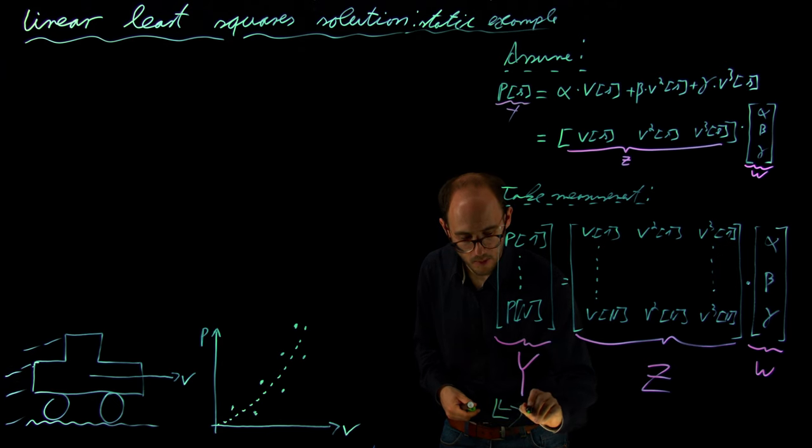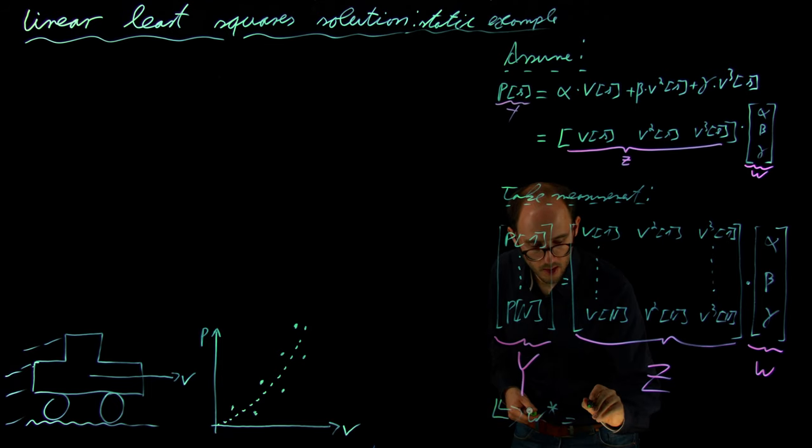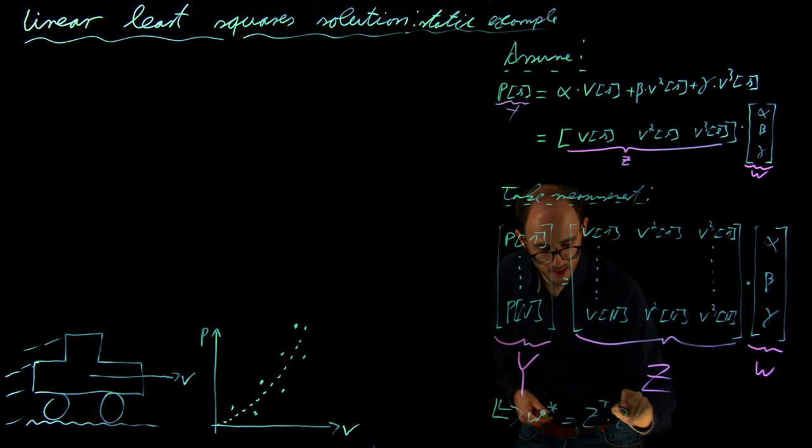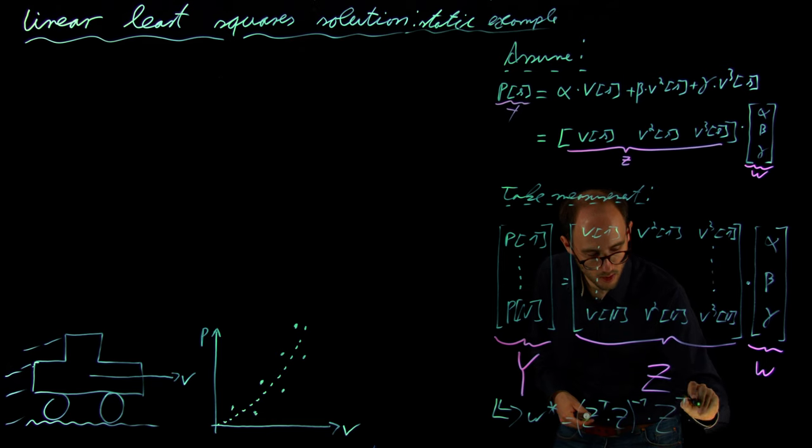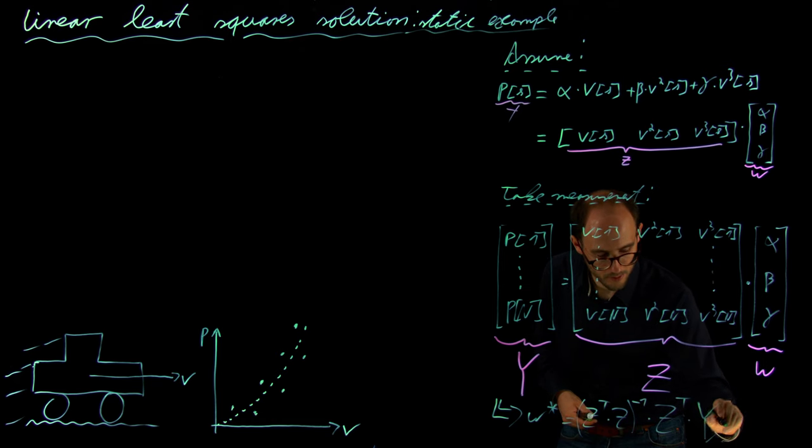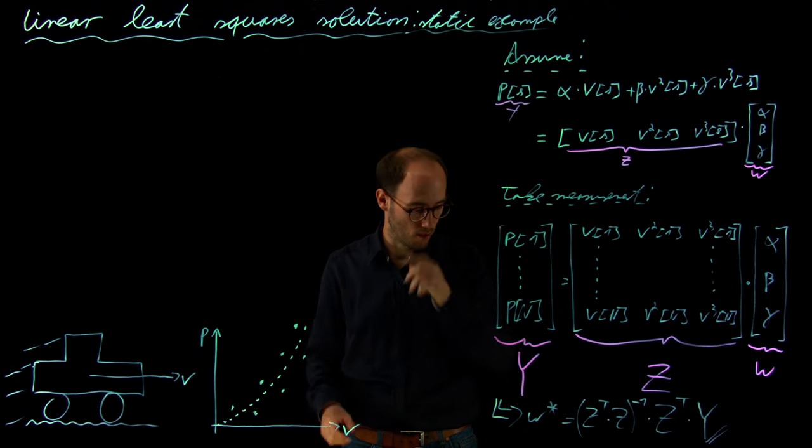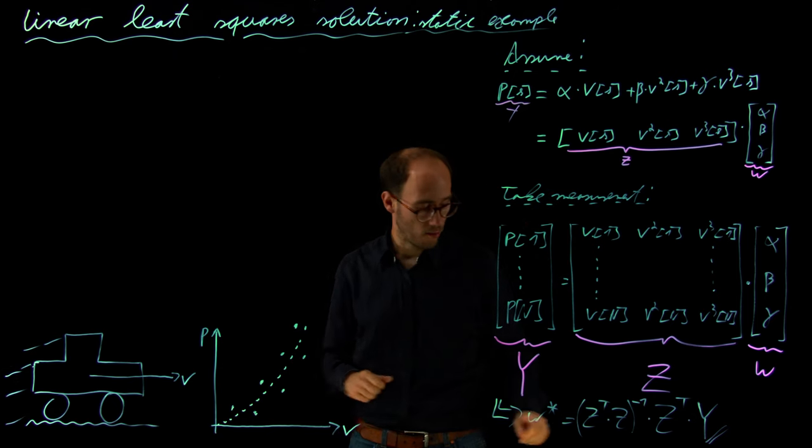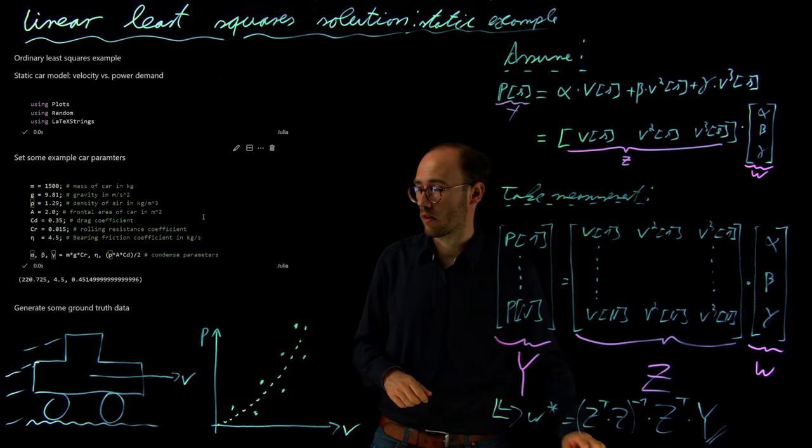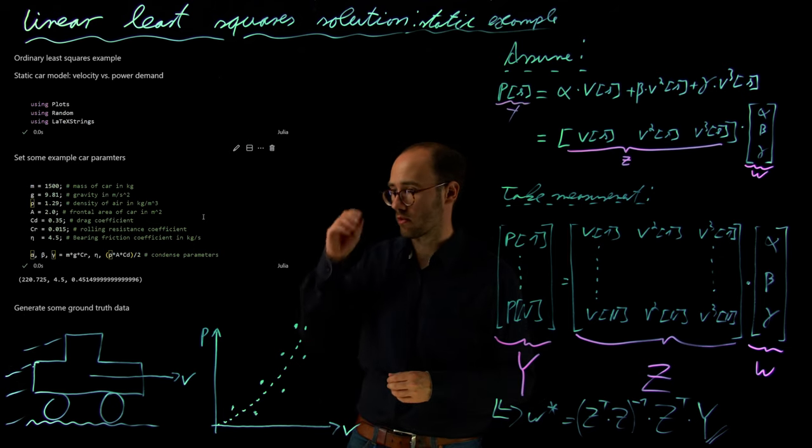So the best possible parameter w_star would be Z_transpose times Z_inverse times Z_transpose times y. So that would be our solution here also for this specific problem. And in order to identify our static car model, we can go into a little bit of Julia code where we have basically set up a numerical experiment to do so.